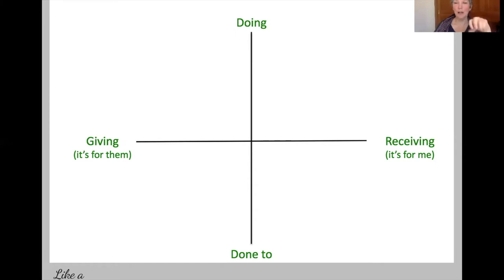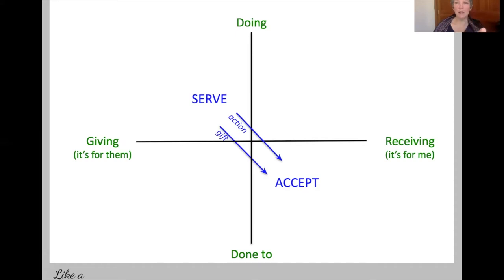So now you can see that there are four quadrants, and let's give them names. When I'm doing and I'm giving — it's for you — then I call that serving. A lot of people call that giving, but as you'll see in a moment, there's another way to give. And when I'm receiving and it's for me, I'm in the accepting quadrant. Many people will call that receiving, but there's another way to receive, so I call that accepting. In the serve-accept dynamic, the action goes from the server to the acceptor, and the gift also goes from the server to the acceptor.